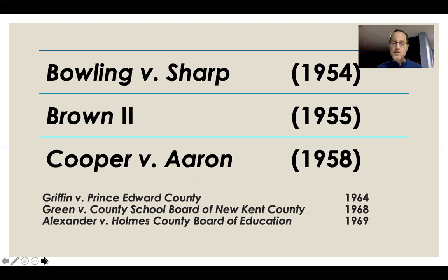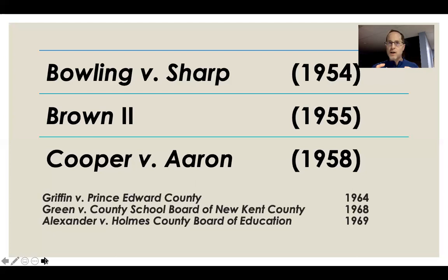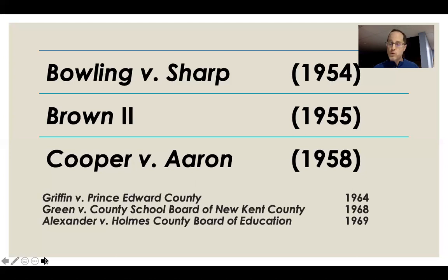The decision in Cooper v. Aaron involves the case of the Little Rock Nine — those nine young African American students who were the first to challenge Little Rock Central High School. The Supreme Court of Arkansas determined that their state did not have to abide by federal law, arguing that Brown only applied to those cases before the court and didn't apply nationally. The Supreme Court in Cooper v. Aaron rejected that position, asserting that the Article VI Supremacy Clause applied.